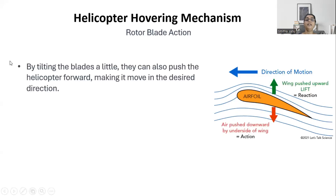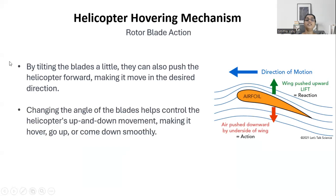Tilting the blade slightly helps the helicopter move forward in a desired direction. The angle at which the blades are rotated helps the helicopter achieve ascent and descent movement. Just by changing the direction and angle of the rotor blades, we can control the ascent, descent, and movement of the helicopter.